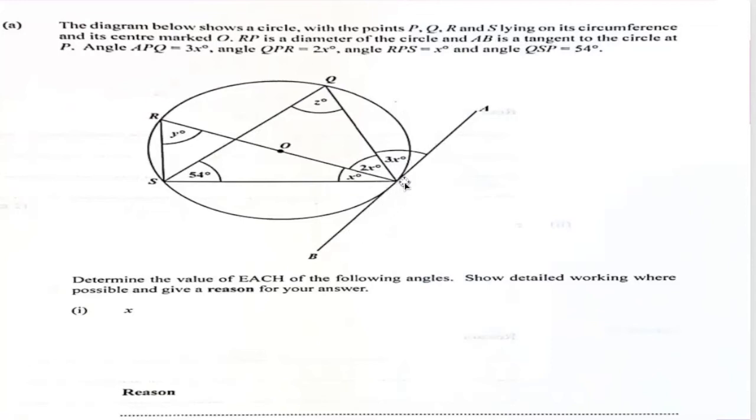Now the angle APQ, that's 3X degrees. And then we have angle QPR, let's find QPR, and this is 2X degrees. And then angle RPS, that's RPS. And finally, we have angle QSP that's 54 degrees. Let's find this. So this is the angle 54, which is QSP.